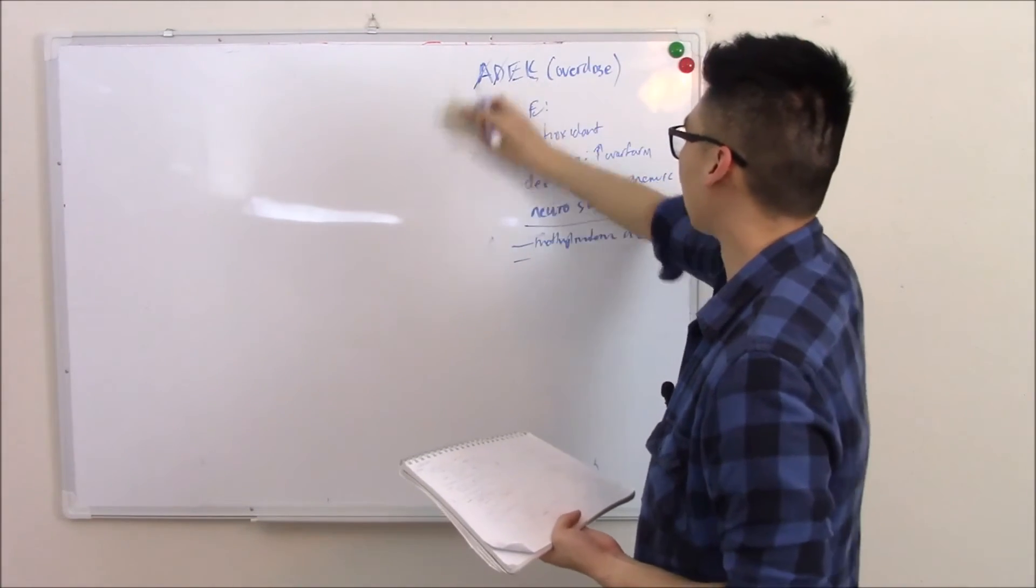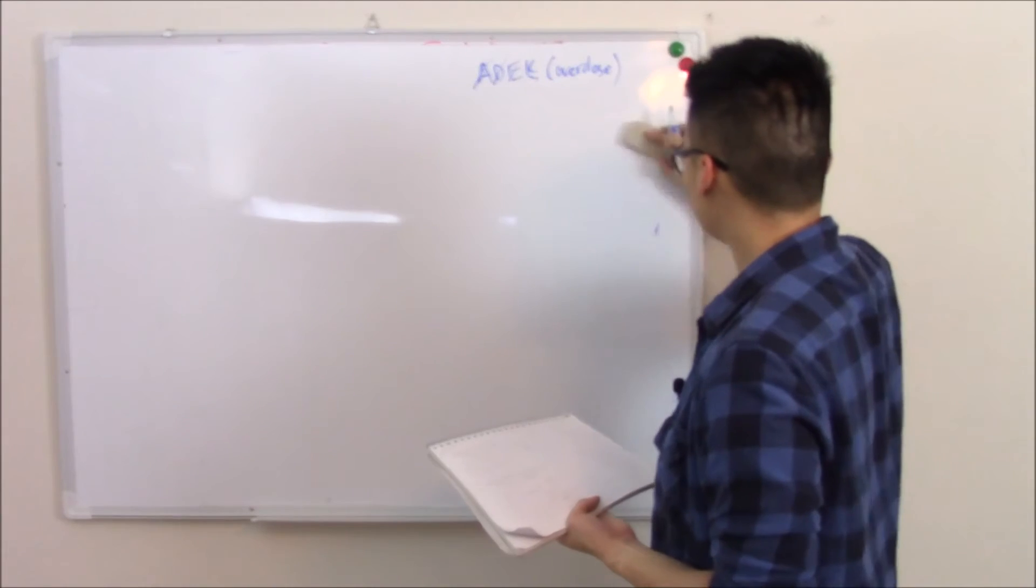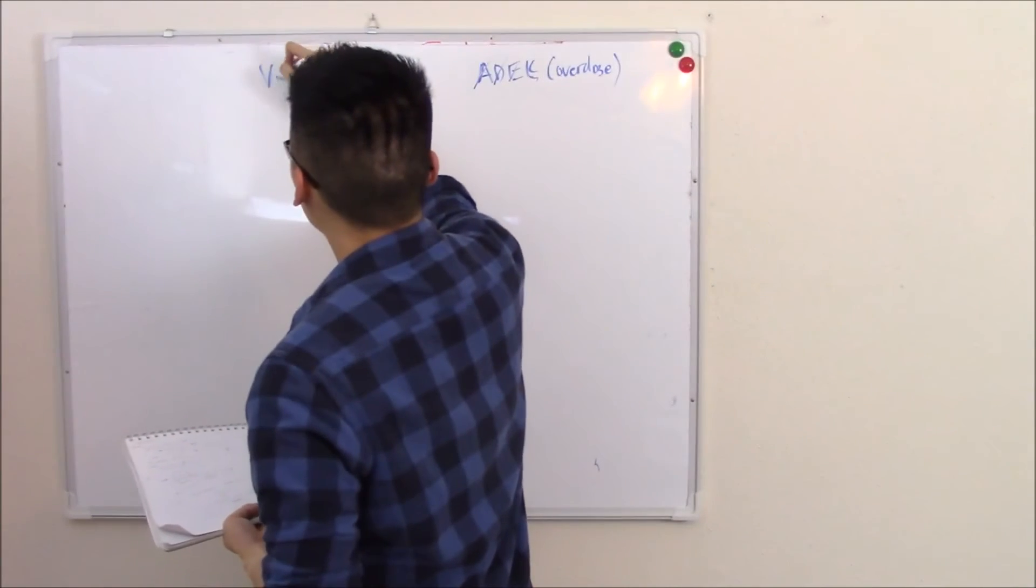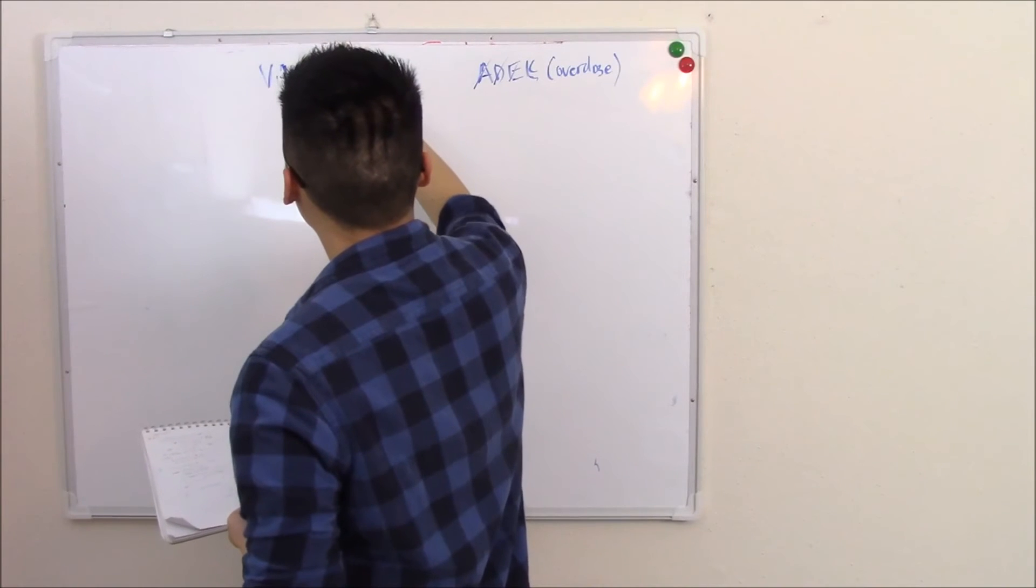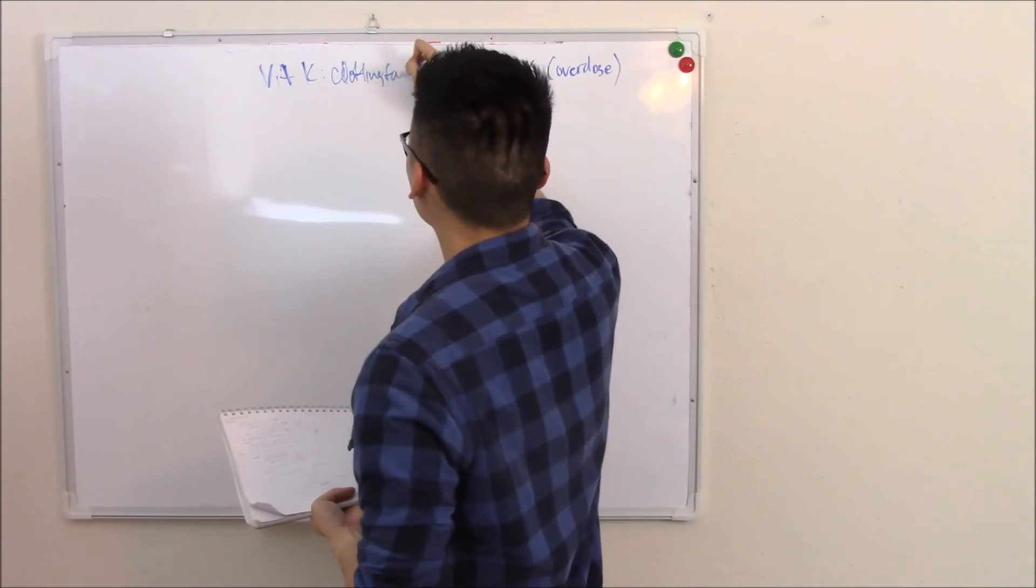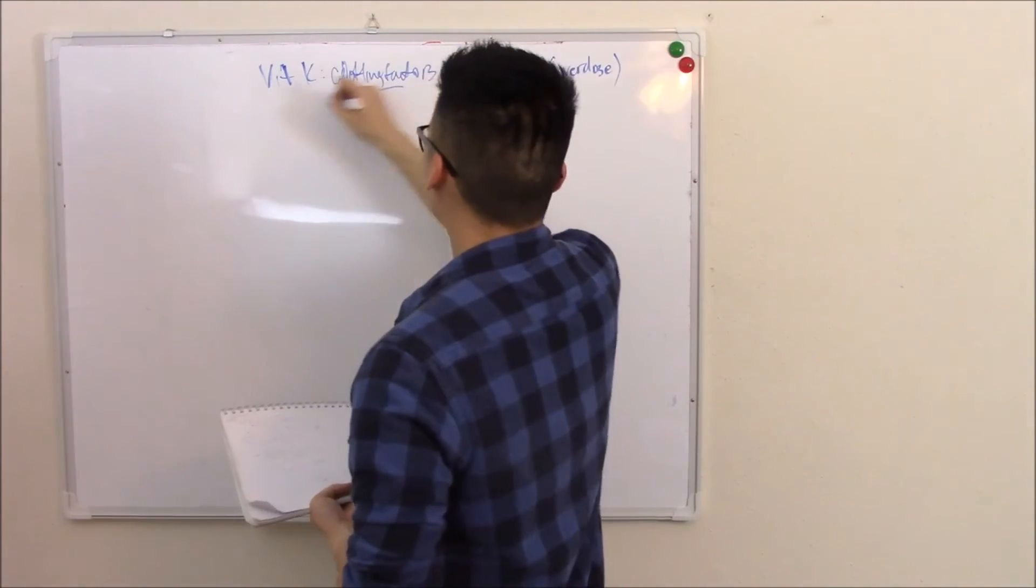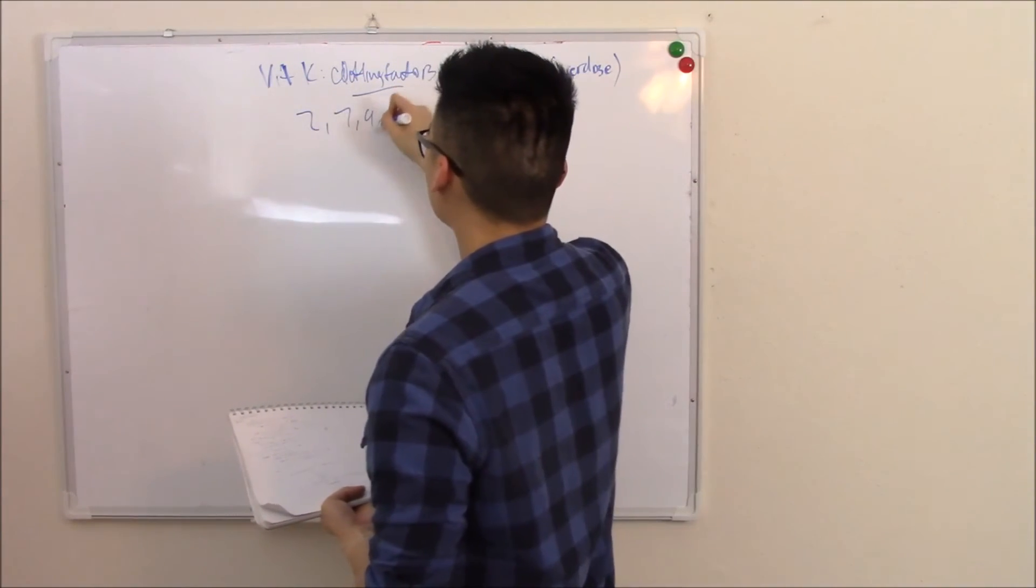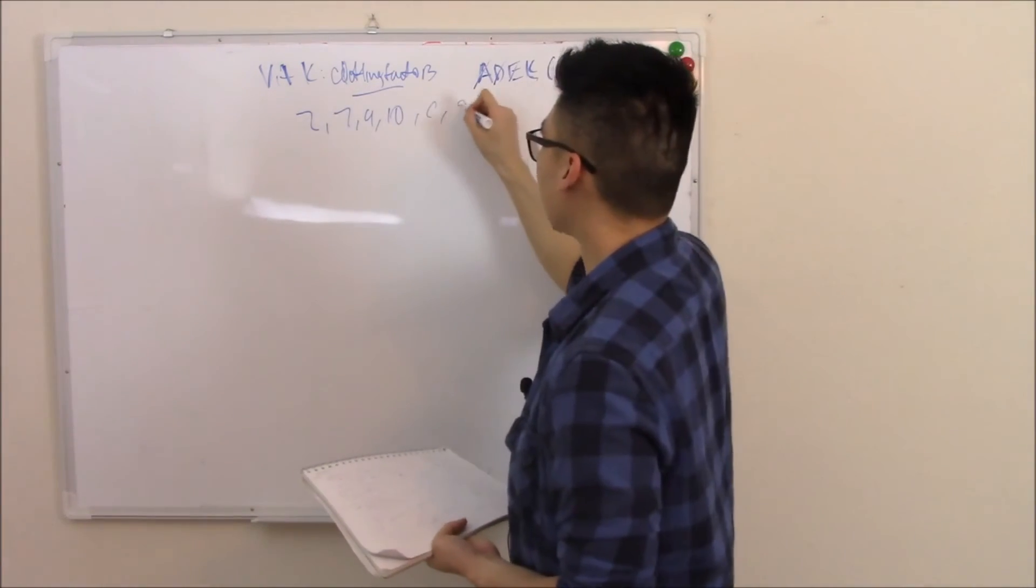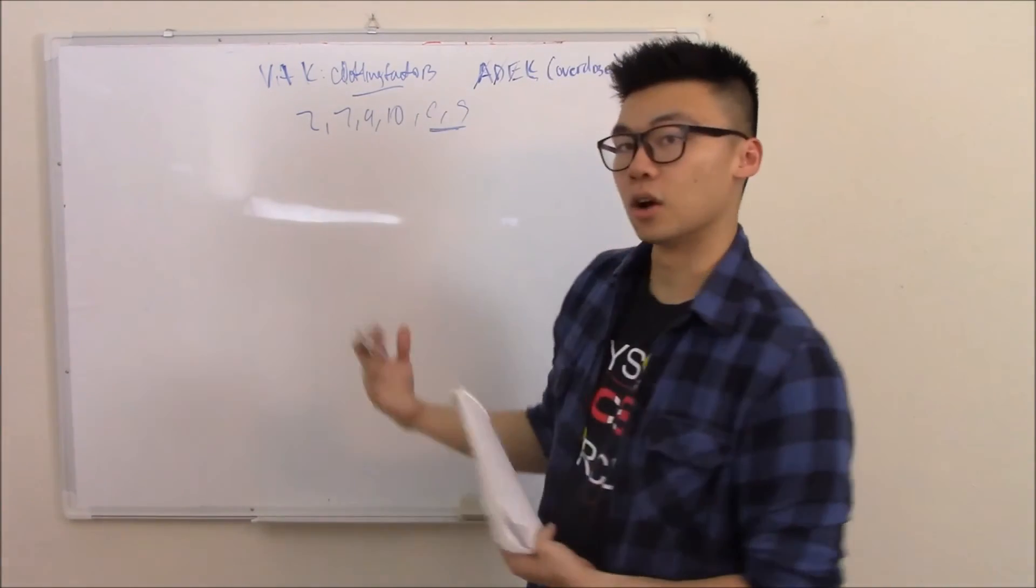That does it for vitamin E. Vitamin K is the last one. Vitamin K is very famous. Vitamin K helps make clotting factors 2, 7, 9, and 10. It also makes protein C and S. You need to know those also.